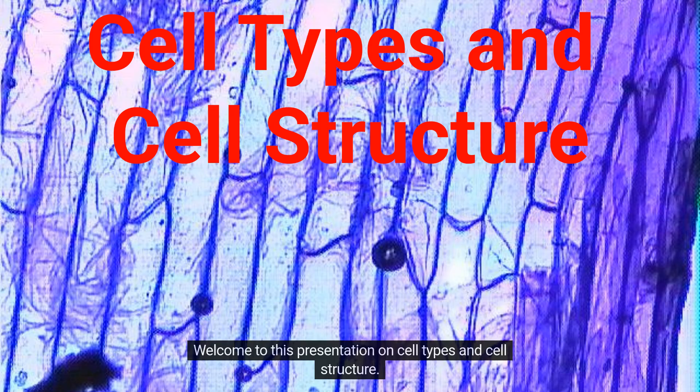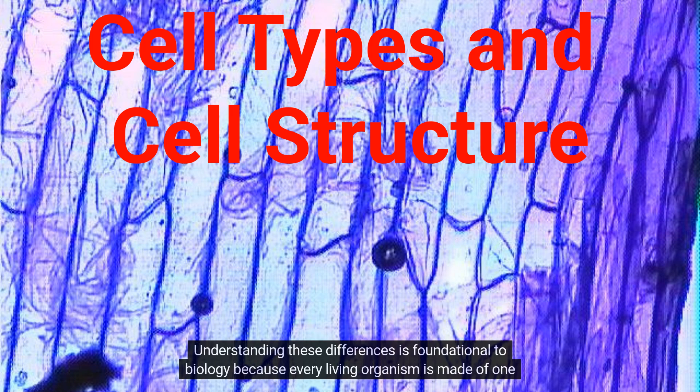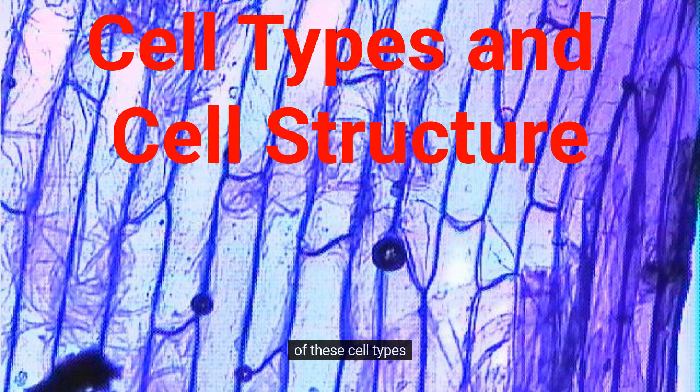Welcome to this presentation on cell types and cell structure. Today we will explore the two major categories of cells: prokaryotic and eukaryotic. These two groups differ in structure, complexity, and function. Understanding these differences is foundational to biology because every living organism is made of one of these cell types.